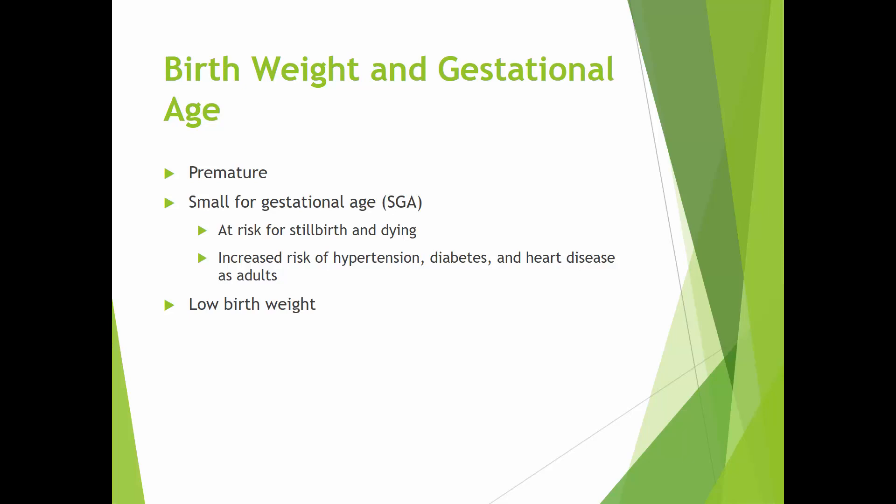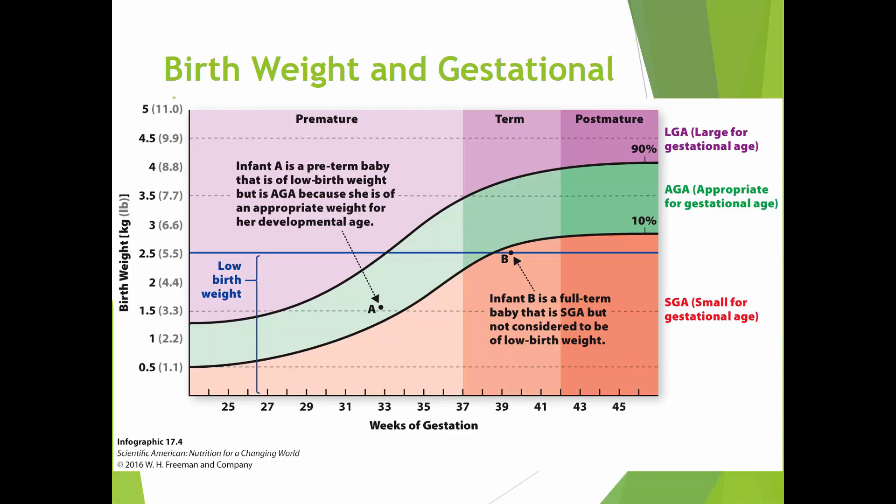Why do we look at birth weight? There are several things we examine to determine health in an infant. Premature means being born before full term. Small for gestational age means the baby was born at, say, 38 weeks but is on the small side compared to other babies born at 38 weeks. Low birth weight is a set number — anything under five and a half pounds is considered low birth weight.